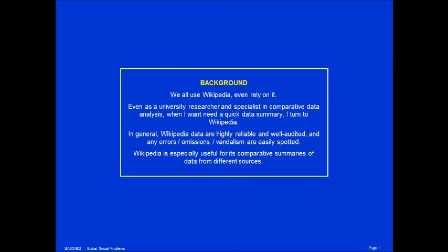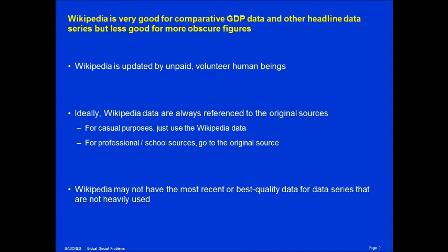We all use Wikipedia — we even rely on it. Even as a university researcher and specialist in comparative data analysis, when I want a quick data summary, I turn to Wikipedia. In general, Wikipedia data are highly reliable and well audited, and any errors, omissions, and vandalism are easily spotted. Wikipedia is especially useful for comparative summaries of data from different sources. It's really a fantastic tool, and Wikipedia is indispensable in the 21st century.